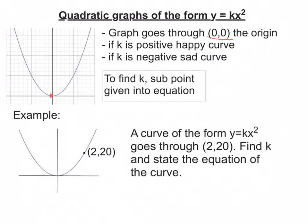And if k is positive, this k here, then it's a happy curve, like the one we've got over here. And if k is negative, it's a sad curve. So it would look a bit like that.